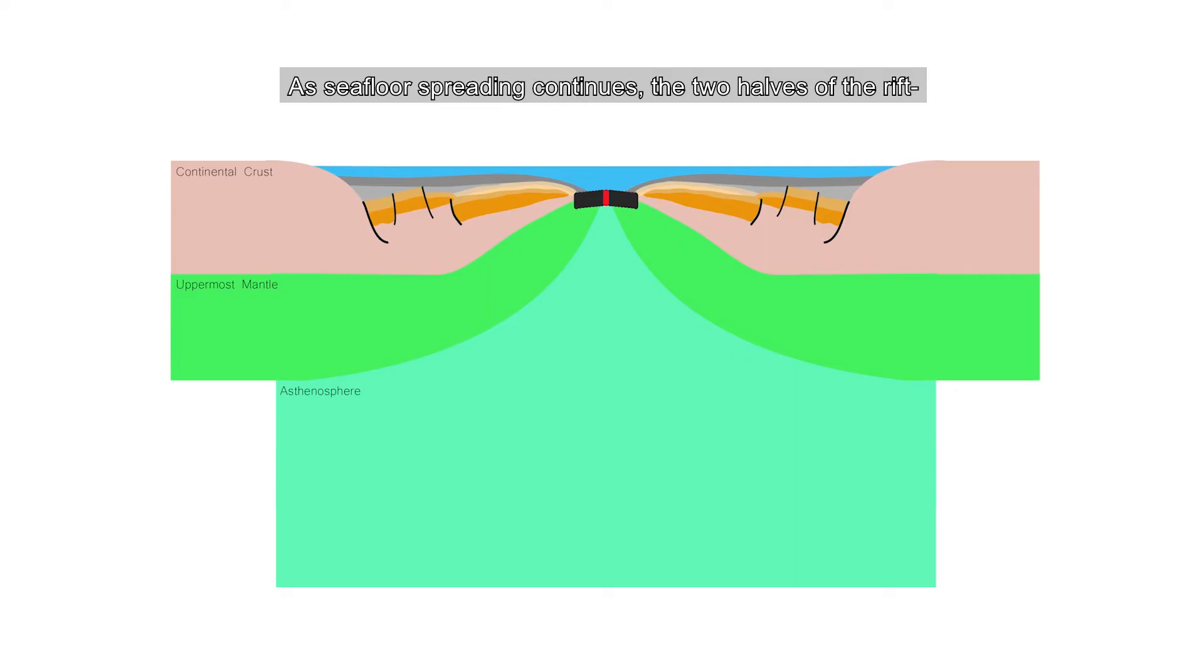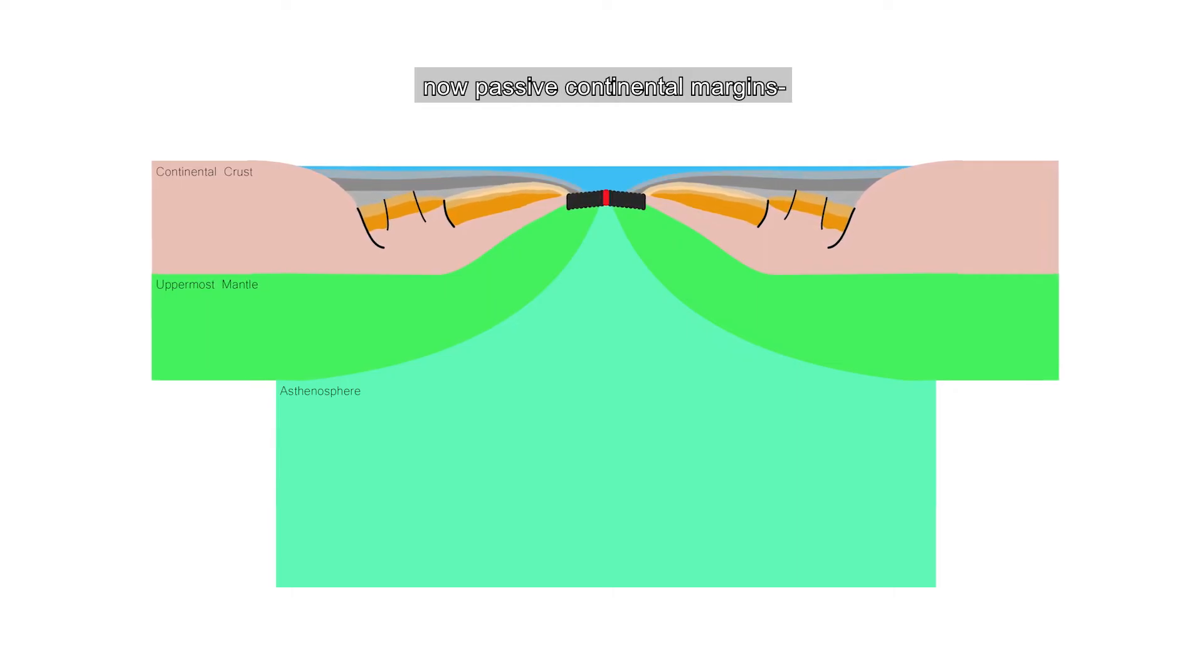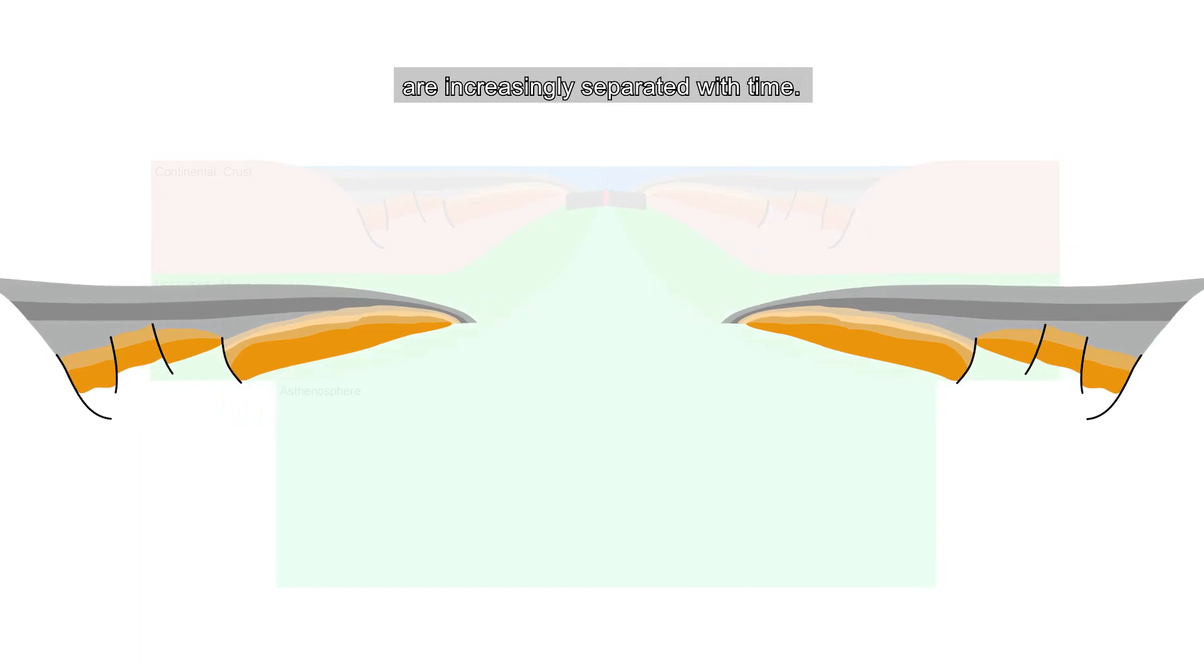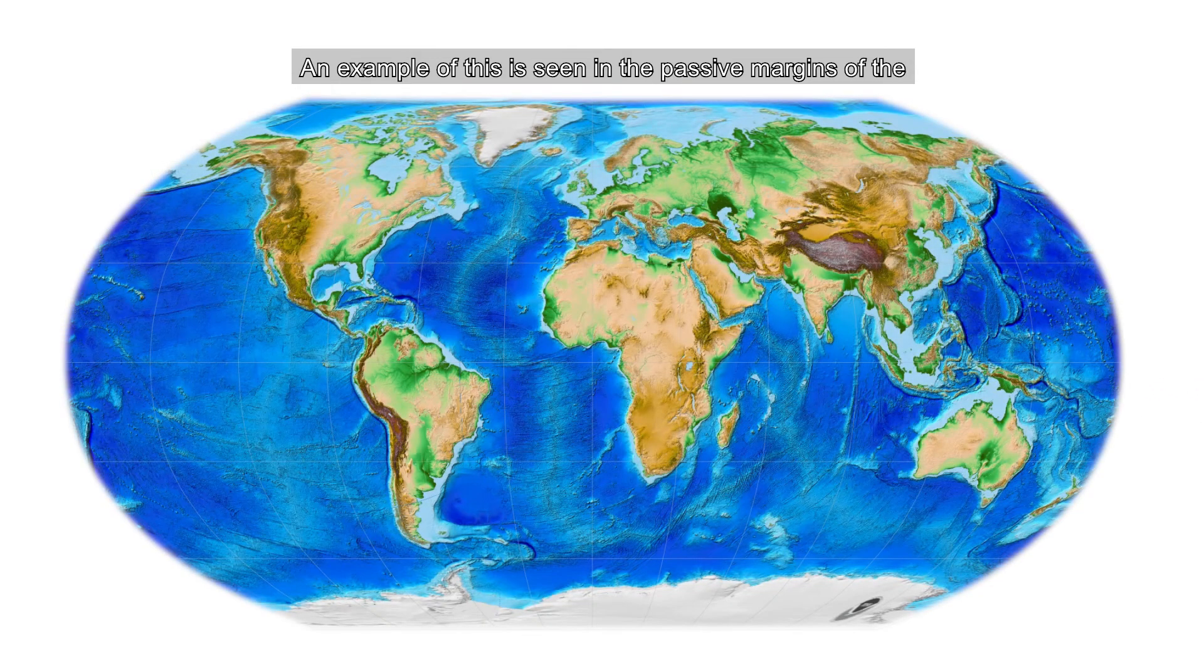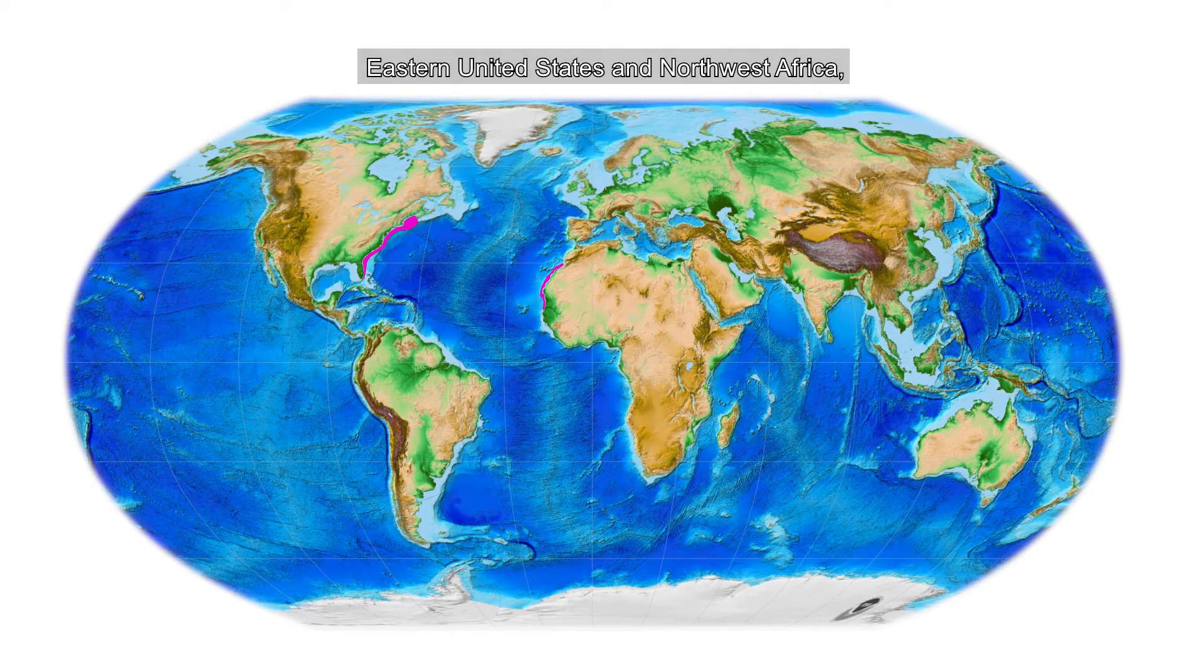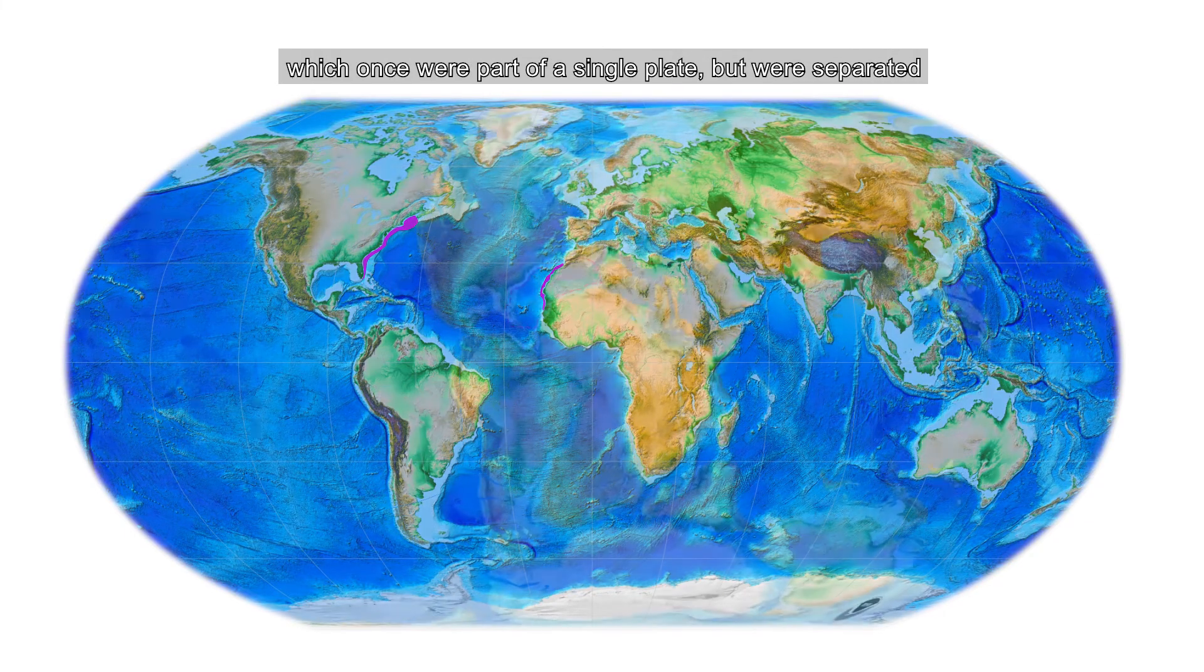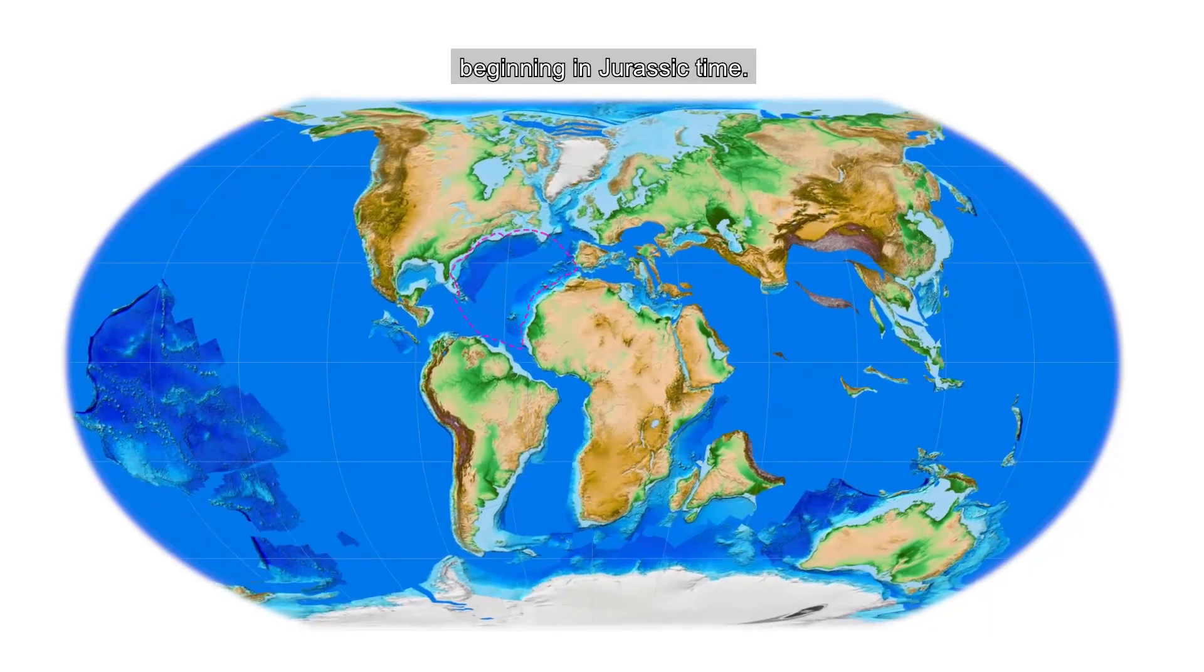As seafloor spreading continues, the two halves of the rift, now passive continental margins, are increasingly separated with time. An example of this is seen in the passive margins of the eastern United States and northwest Africa, which once were part of a single plate but were separated beginning in Jurassic time.